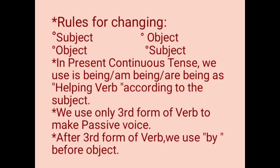Now we will learn the rules for changing active voice into passive voice. The first rule is: subject changes into object, and then object changes into subject. In continuous tense, we use 'is being', 'am being', or 'are being' as the helping verb according to the subject.